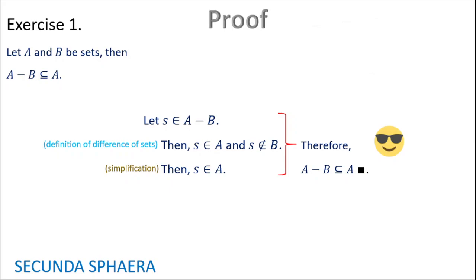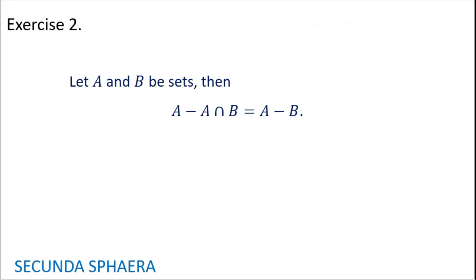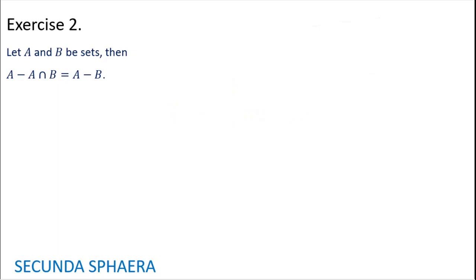This was quick. And now we can move on to exercise number 2. It says: let A and B be sets. Then the set A without the intersection of A and B is equal to the set A without B. If you want, give it a try. Feel free to pause the video. Also, you can share your solution or comments down below.